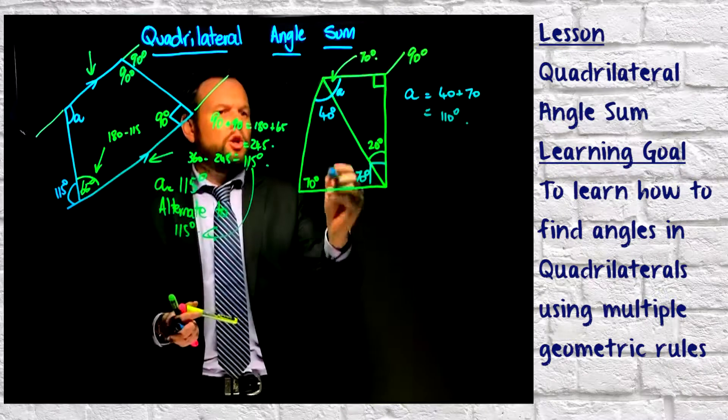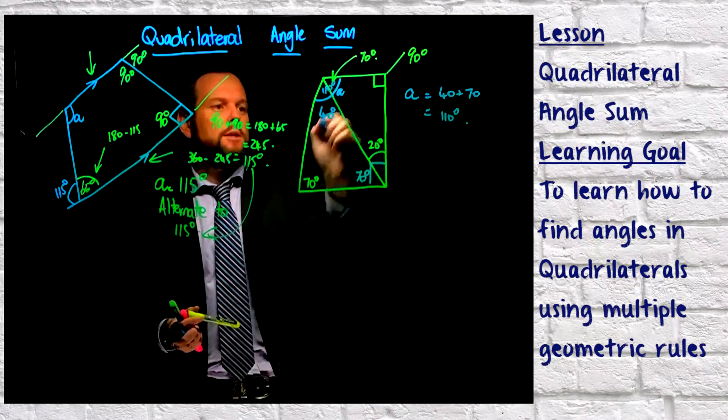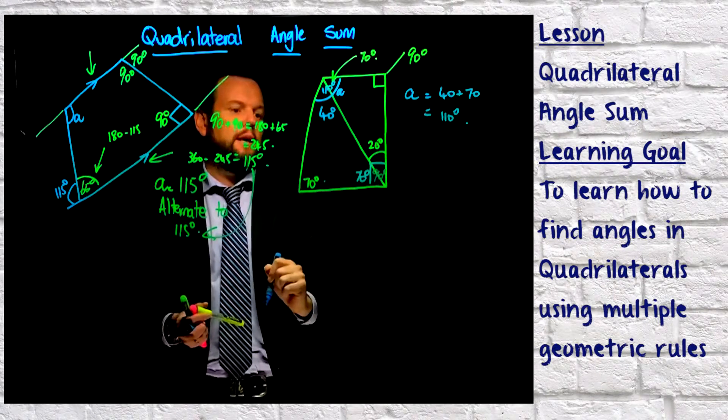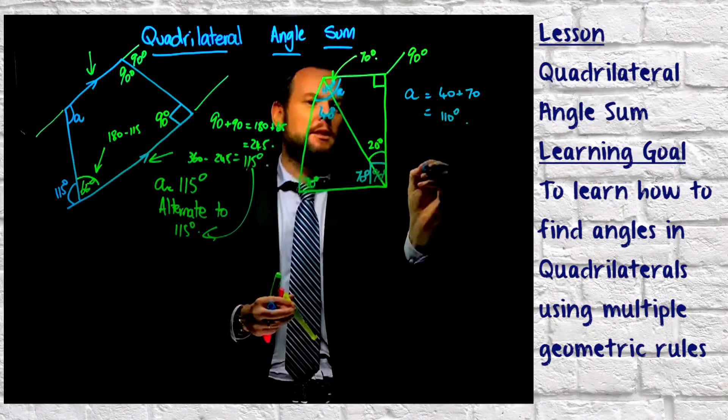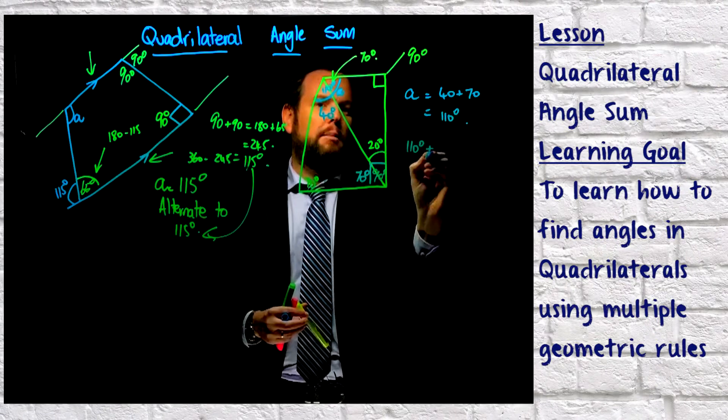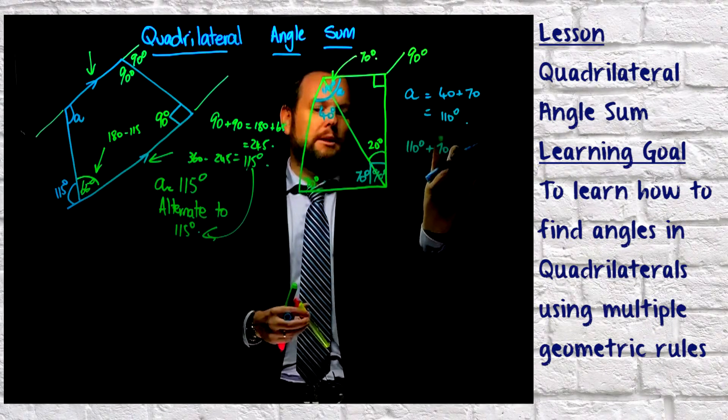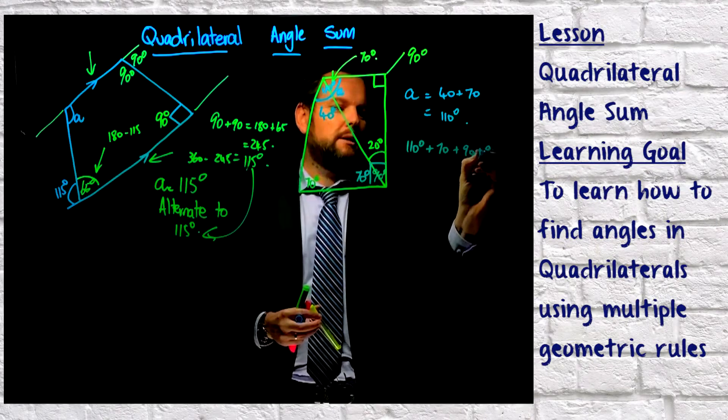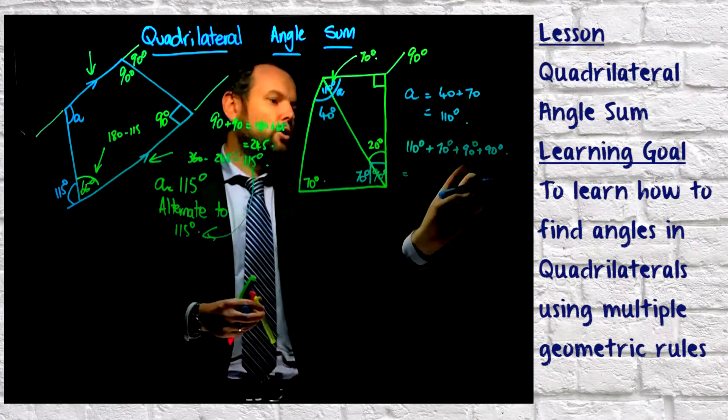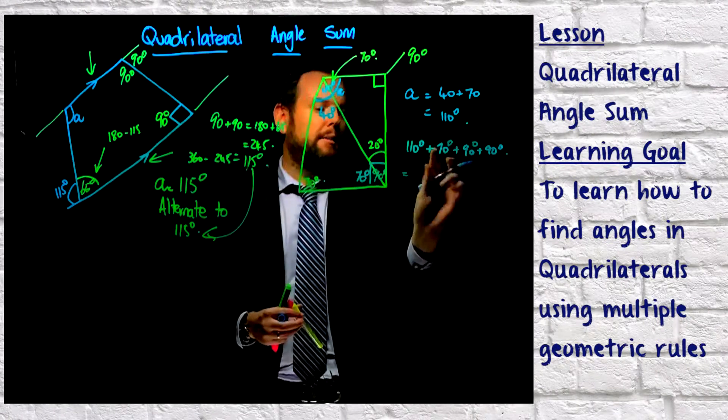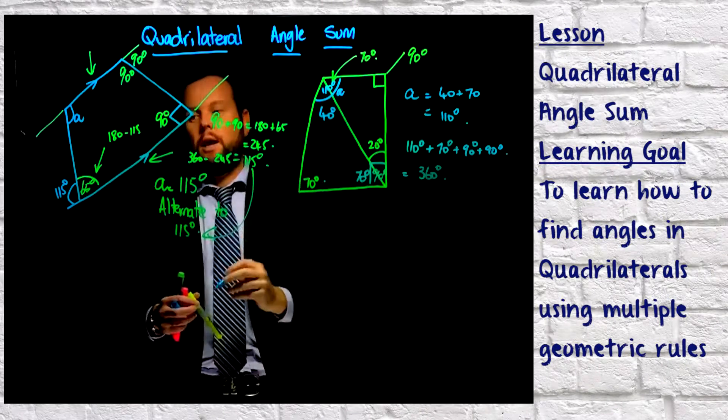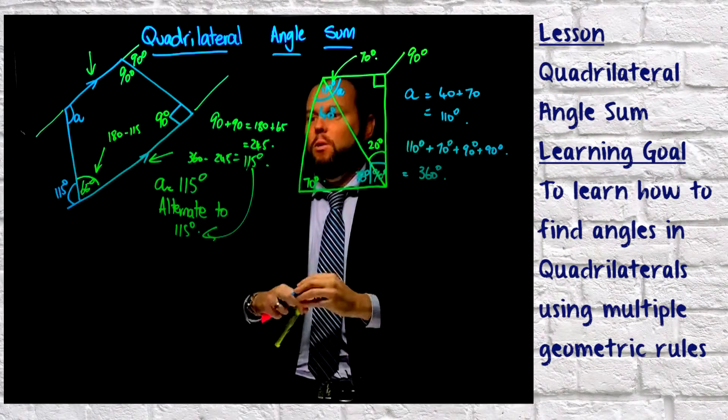Now, important to note that I could check this. If that equals 110, and that there equals 90, and this here equals 90, and then this here equals 70. Let's see if it adds up to 360 degrees. So I've got 110 plus 70, plus 70, plus 90, plus 90. So let's add them together. That makes 200, that makes 290, that makes 360. So we are correct. We have 360 degrees in a quadrilateral, which is how many degrees we need in a quadrilateral.